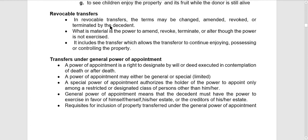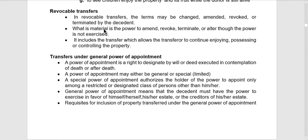Revocable transfers are transfers where the terms may be changed, amended, revoked, or terminated by the decedent. The thought behind revocable transfer is that there is a transfer of possession but not ownership — only the possession of the property is transferred, not the absolute ownership. Therefore, the decedent during his lifetime can change, amend, revoke, or terminate the transfer of such possession and can take it back from the transferee. Upon the death of the decedent, those properties considered to be revocably transferred during his lifetime will still form part of his gross estate. It includes a transfer which allows the transferor to continue enjoying, possessing, or controlling the property.